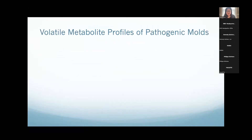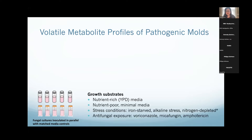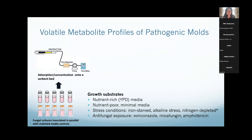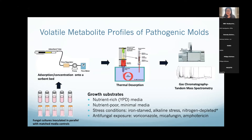We started looking at the volatile space of pathogenic molds. This work was being done for other pathogens like tuberculosis, where people were looking at the gas of tuberculosis and what it produces — what are the metabolic fingerprints that you can find in the volatile space that you could potentially detect in the breath. Some of this initial work started with fungal cultures, not looking at the liquid part but at the gaseous phase above everything, growing these on growth substrates that mimic the human lung, concentrating volatiles onto a sorbent bed, and analyzing them using thermal desorption GC-MS.